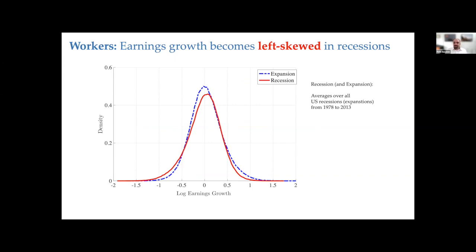On the worker side, this is from a paper in the JPE 2014 with Serdar Ozkan and Jay Song. We use US Social Security Administration administrative data on earnings. The blue line is the real histogram of annual earnings growth averaged over US expansions, and the red line is earnings growth averaged over US recessions. You can clearly see the shift towards negative skewness — the left tail is expanding and on the right it is shrinking. I'll put this in log scale in a moment; you'll see these are actually very substantive changes.